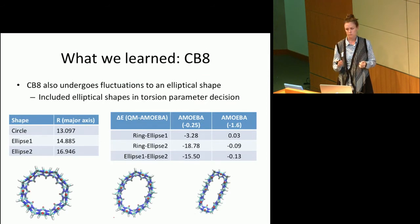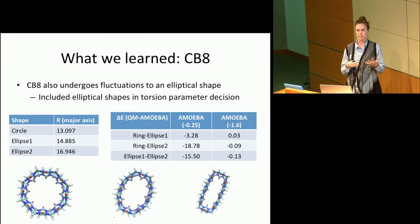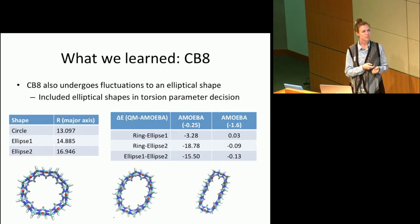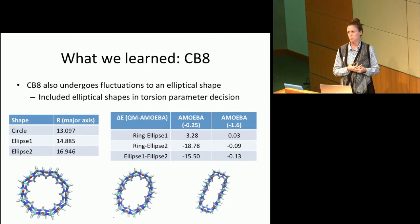This was further reinforced by looking at the ring pulled into an ellipse shape — trying to ensure the fluctuation of the ring is described properly. We tested two different elliptical shapes, again running quantum calculations to get those energetics, and observed that our proposed new torsional value of −1.6 is in better agreement with quantum than our previous torsional value for cucurbituril-8.